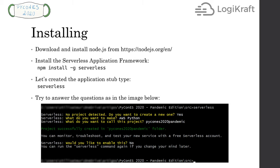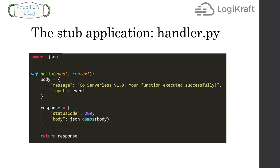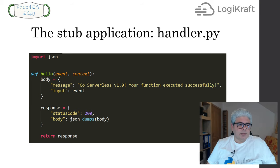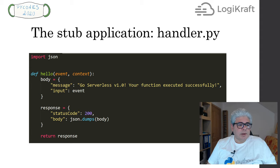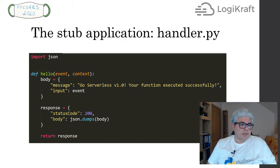This is the stub application — the handler.py — created by the Serverless Framework from the command we gave in the previous slide. It's very simple: it's a Python function that receives two parameters — the event and the context. We will only be using the event. The rest is pure Python: we create a dictionary, attach the event as the input, build the response as another dictionary, set the status code to 200, and create the body using `json.dumps`. No framework — just the standard JSON module from Python.